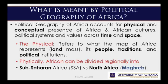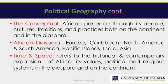The physical also refers to how Africa is divided regionally into sub-Saharan Africa and north of Africa. When we say north of Africa, we are referring largely to the Maghreb. The conceptual can be explained as Africa's presence through its people, cultures, traditions and practices, both on the continent and in the diaspora.